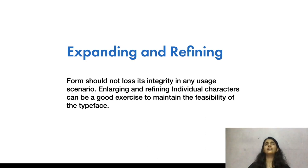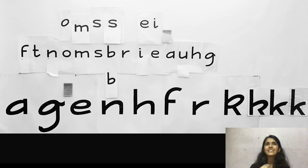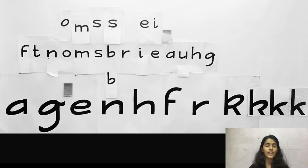Another thing I was working on was that a form should not lose its integrity in any usage scenario. As you see, I started working on A4 sheets and then moved to half imperial sheets to enlarge the characters and see if they lose their integrity when enlarged. If they do, you make small refinements so that your typeface is more feasible across every usage scenario.